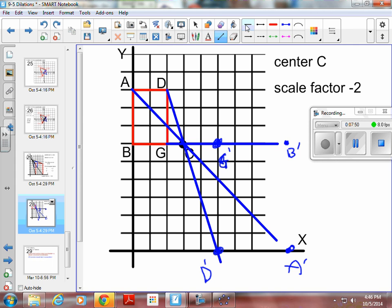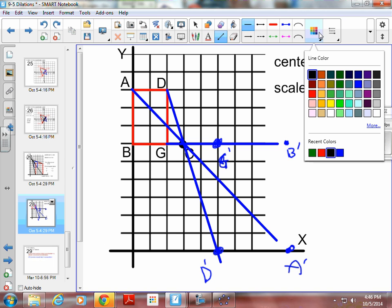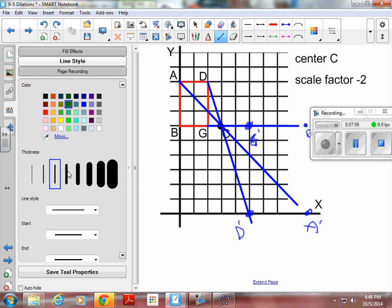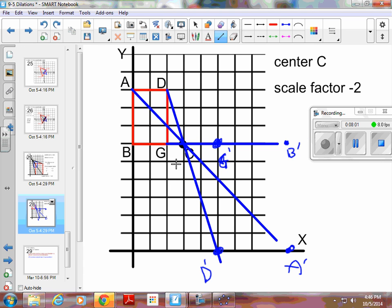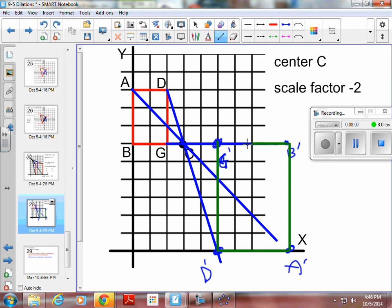And then you can take your ruler and you draw in your segments. Let me use like green or something so we can see it. And a little thicker line so we can see it. So here is my image under the dilation of a negative 2 through a center C.